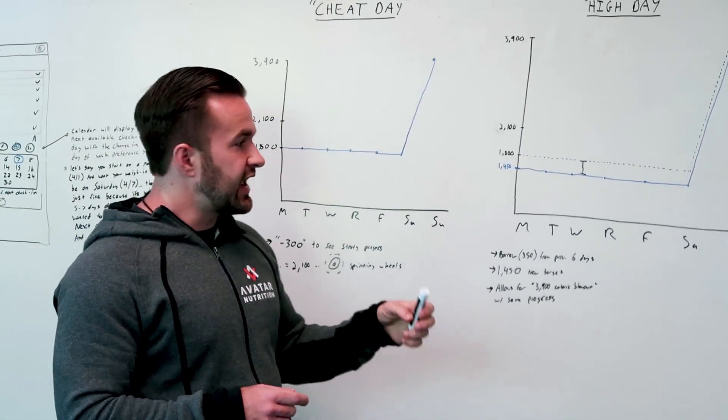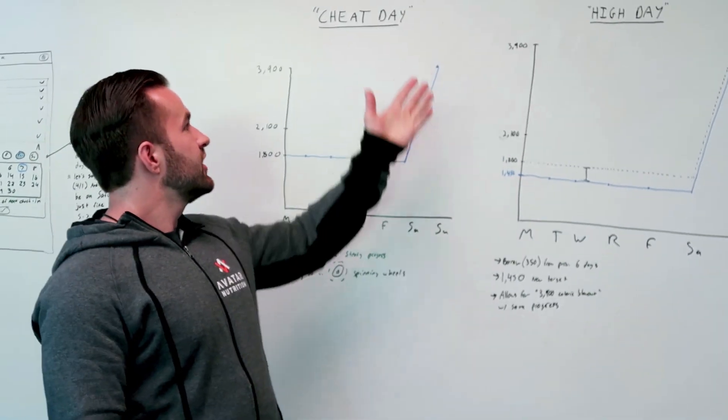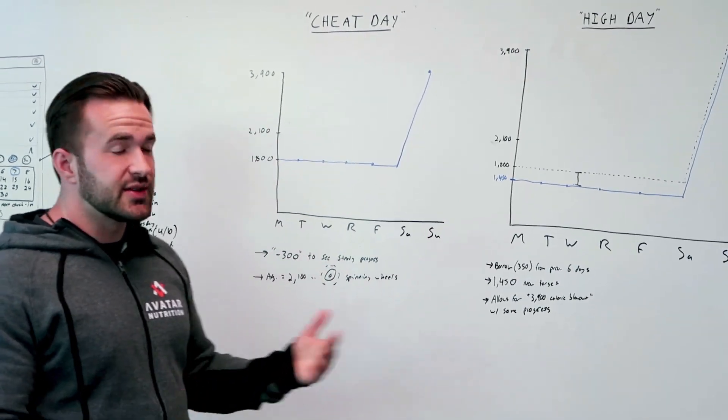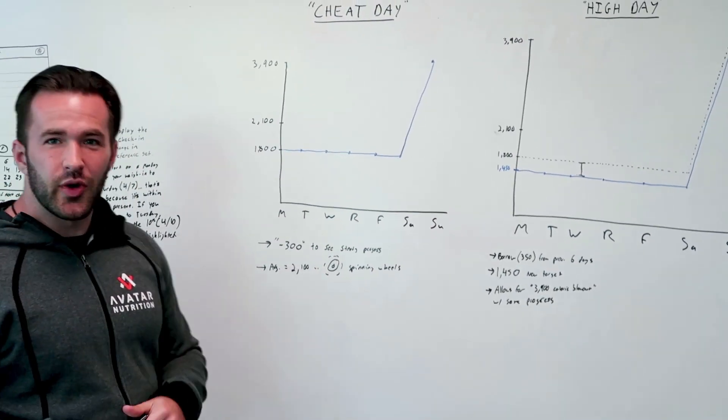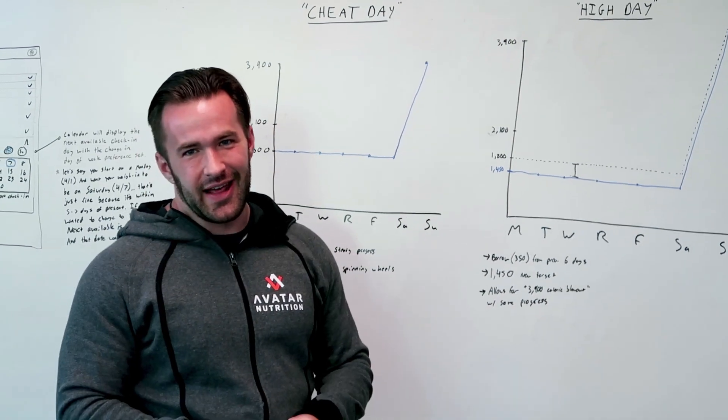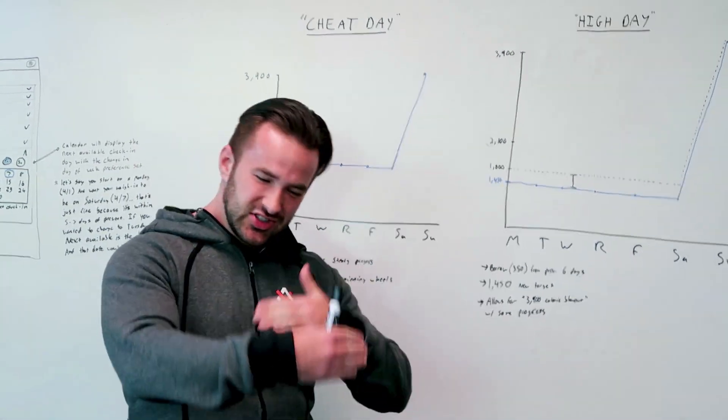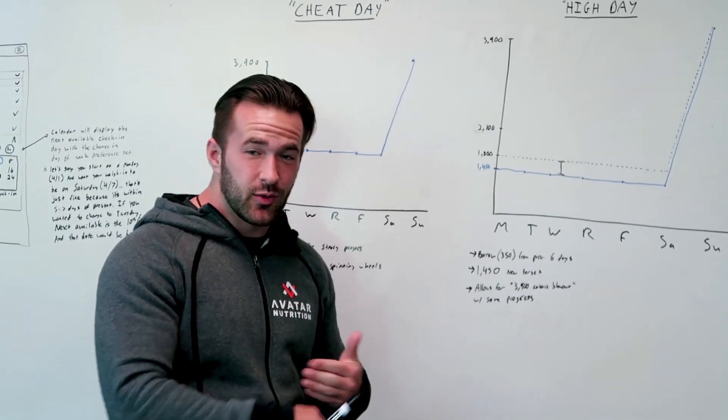So if you look at the average of all these days, six days at 1,800, one day at 3,900, what it ends up coming out to is 2,100, exactly what they maintain their weight at. So that is by definition as spinning of your wheels as spinning of your wheels gets.